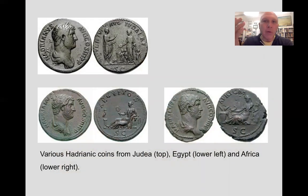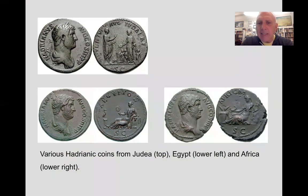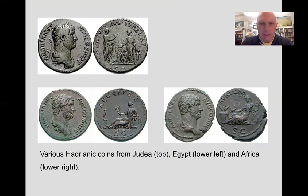There's a consistency in the likeness, whether in full bust portraits or in full-length images of the emperor. And lots and lots of coins from all over the empire with his likeness on one hand, and then allegories on the other of the various places he ruled — in this case, images of Judea, of Egypt and Africa.